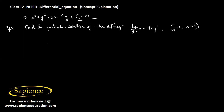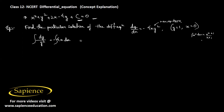If y is not equal to 0, we separate variables to get dy/y² equals −4x dx. This function is also of variable separable type. Integrating both sides using the power rule — integral of xⁿ dx equals x^(n+1)/(n+1) — we get y^(−2+1)/(−2+1) equals −4 times x²/2, plus constant c₁.